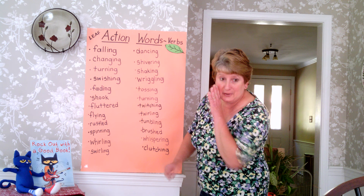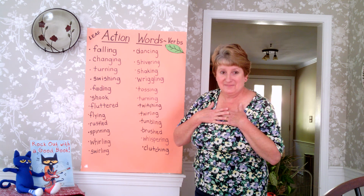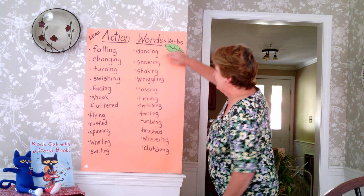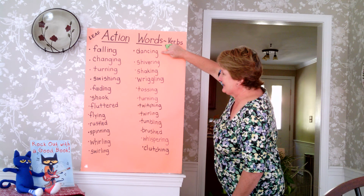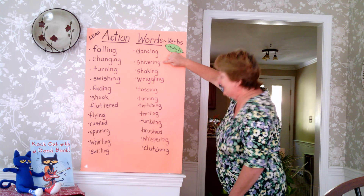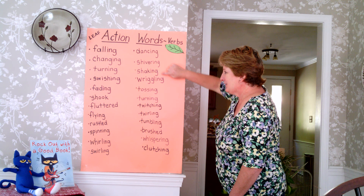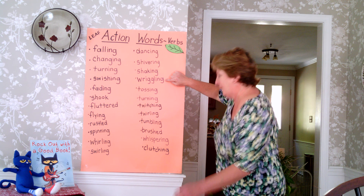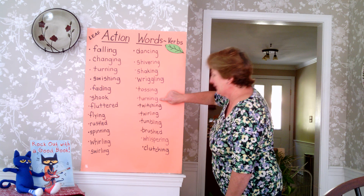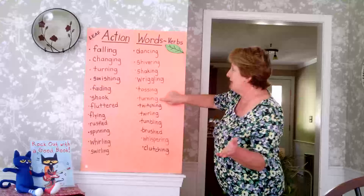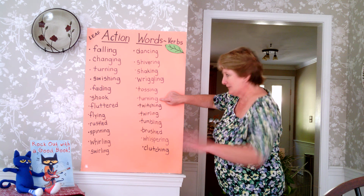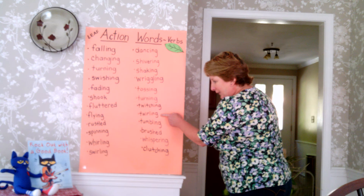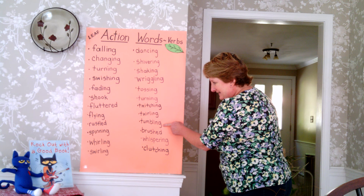Let's finish the list. Dancing. Shivering. Shaking. Wiggling — that's what I was talking about, the monarch caterpillar and butterfly, that little wriggling motion. Tossing. Turning — you might have those actions in bed when you can't sleep: tossing and turning, and those are verbs. Twitching. Twirling. Tumbling. A lot of these are actions that people could do too, not just leaves.